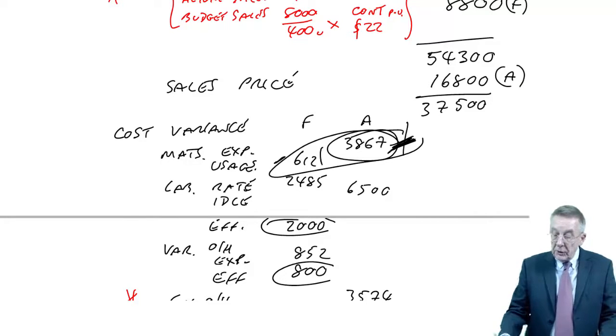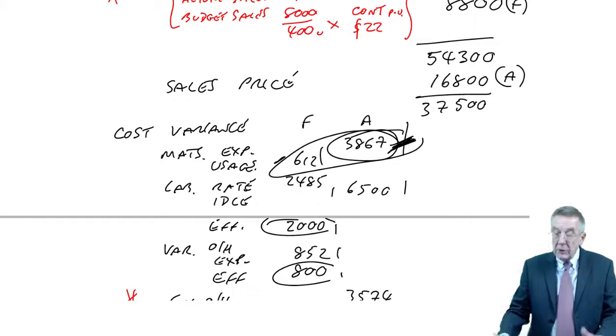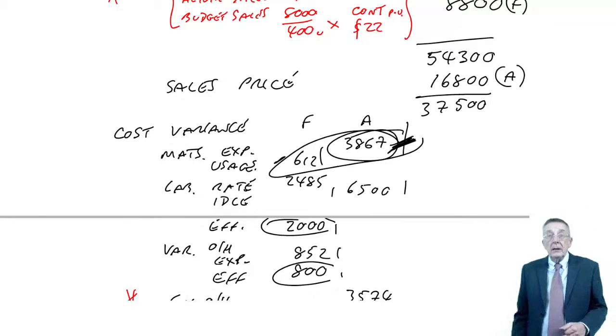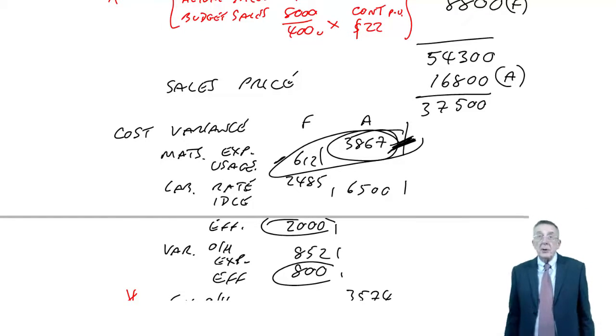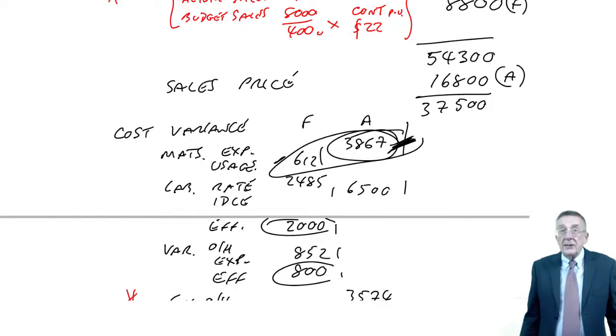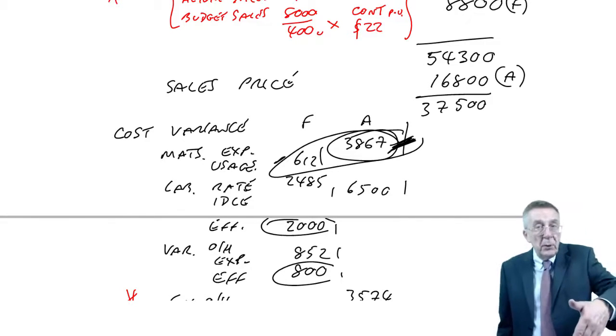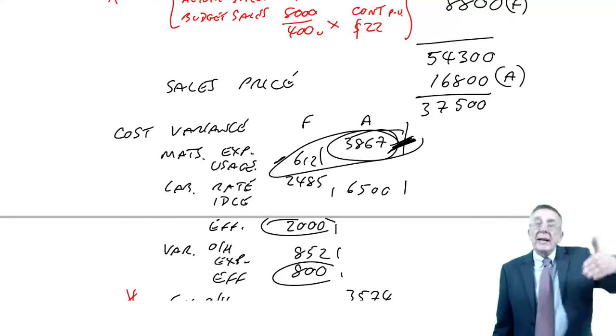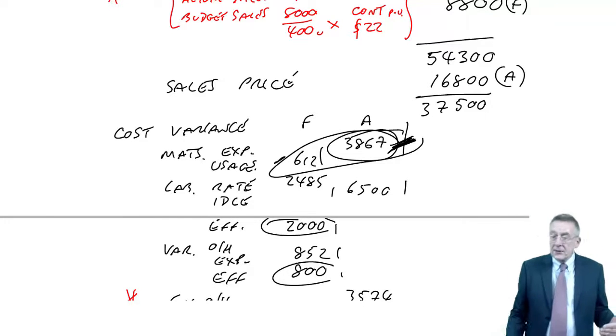We have to look at the two together and say, overall, was it worth spending more to get the saving? Was there a net saving or an extra cost? It's no good just looking in isolation. This link between the two, there certainly can be cases where it's worth spending more somewhere if you'll get a bigger saving somewhere else.